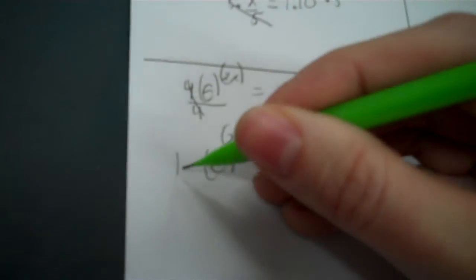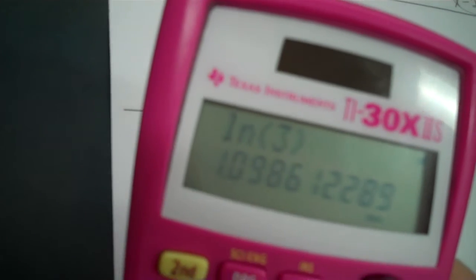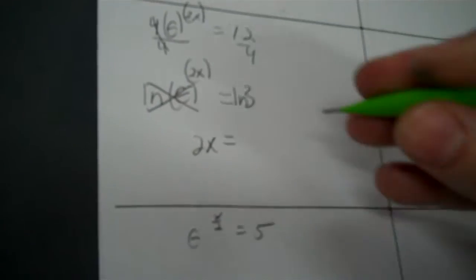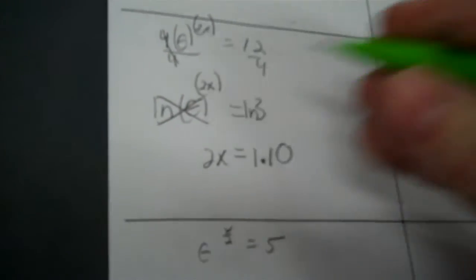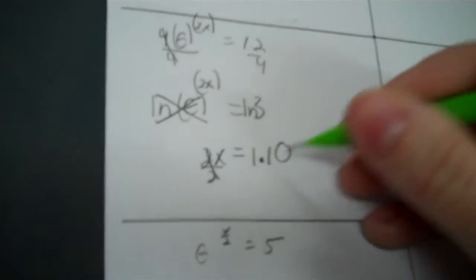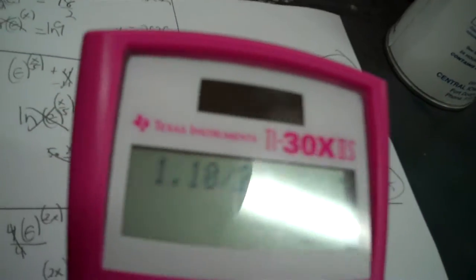Okay, time to say goodbye to Mr. E. LN, LN. Get rid of that. We have 2X. Now I just find LN 3. Okay, 1.10 again. Now you have to divide by 2. So that's my answer. Okay. So 1.10 divided by 2 is going to be 0.55.